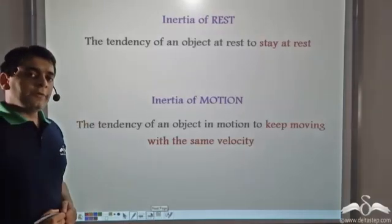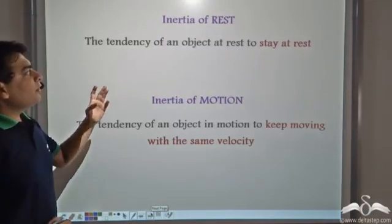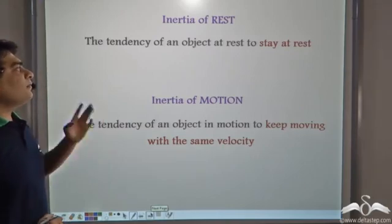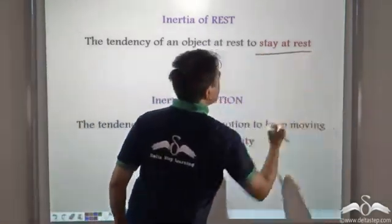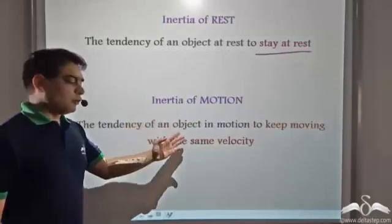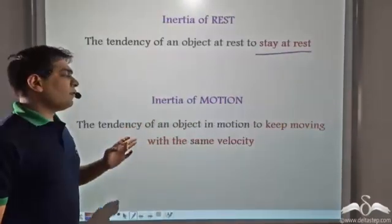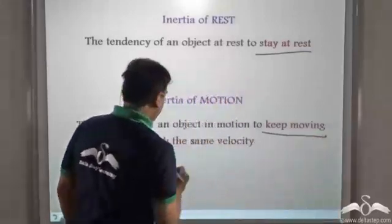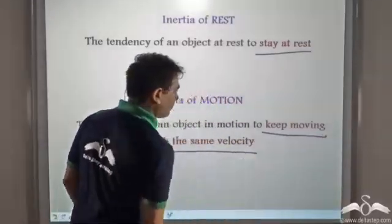Now inertia could be of two types. Inertia of rest, which is the tendency of an object at rest to stay at rest. And inertia of motion, which is the tendency of an object in motion to keep moving with the same velocity.